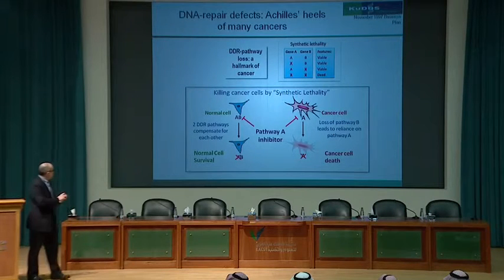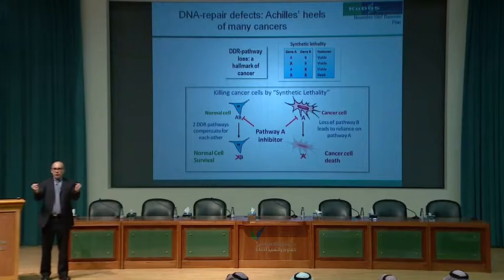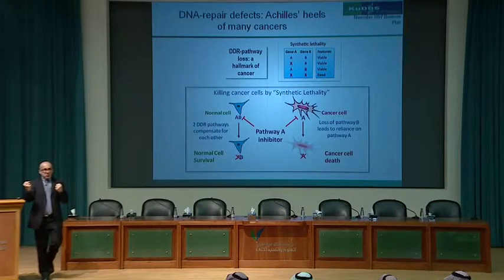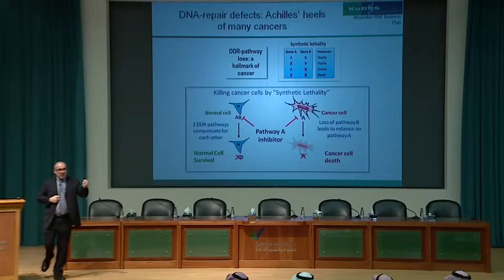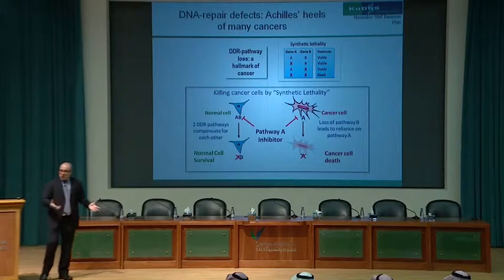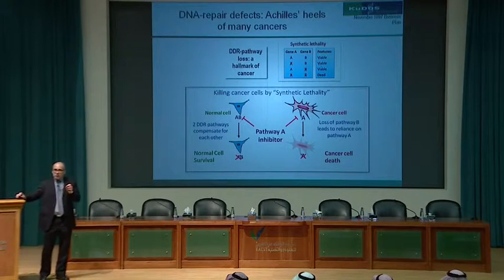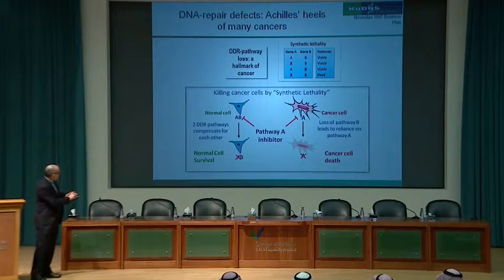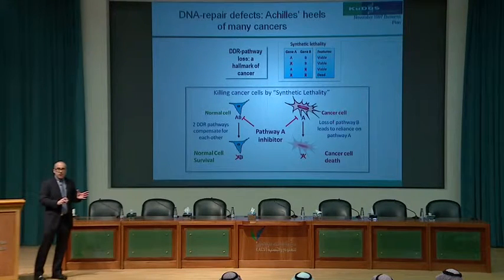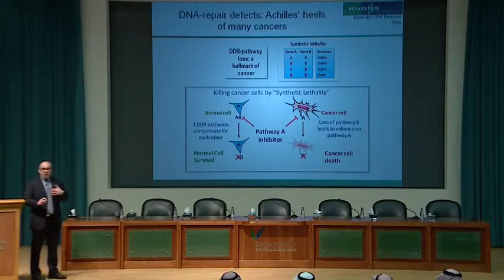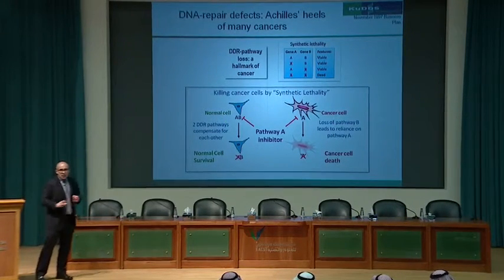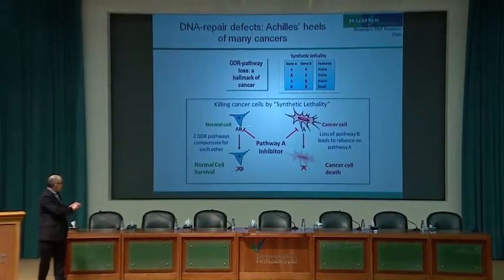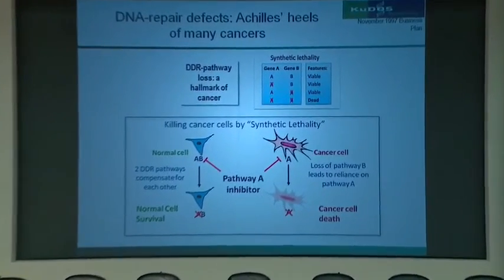If a normal cell has two ways to repair a double strand break, removing one is still okay; the other compensates. But removing both is lethal. The concept behind Kudos was to translate this genetic principle into pharmacology: if a cancer cell has lost pathway B, it is more reliant on pathway A than a normal cell. If we develop a drug to inhibit pathway A, we would selectively kill the cancer cell but not the normal cell.